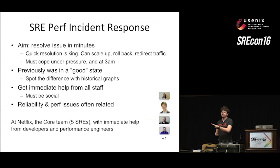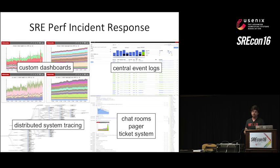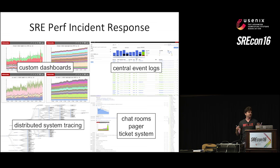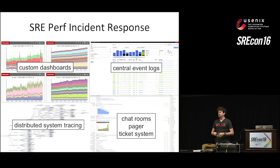The SRE team and the performance engineering team at Netflix sit next to each other. The tools that SRE incident response uses include: custom dashboards, central event logs — really important to correlate what happens at given times — distributed system tracing, and chat rooms with the ability to page people and a good ticketing system. These are more the tools of the SRE trade in comparison to performance engineering.